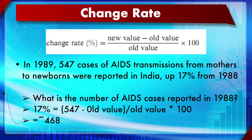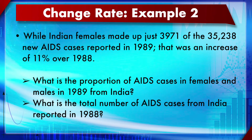Another change rate example: Indian females made up 3,971 of the 35,238 new AIDS cases reported in 1989, an increase of 11% over 1988. Given this, what is the proportion of AIDS cases in females and males in 1989 from India, and what is the total number of AIDS cases from India reported in 1988? Students can work this as an assignment and discuss answers in the course discussion forum.